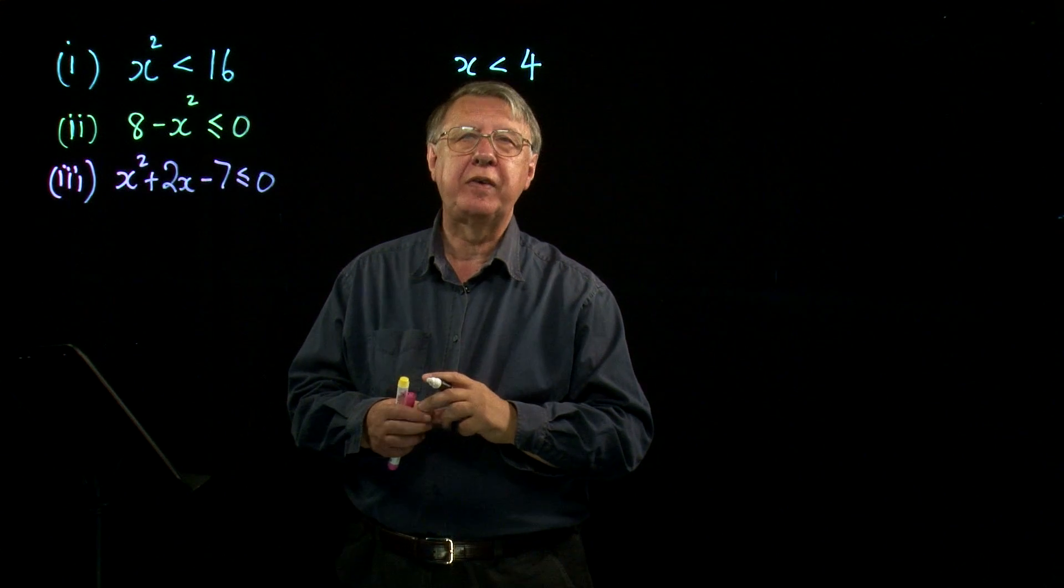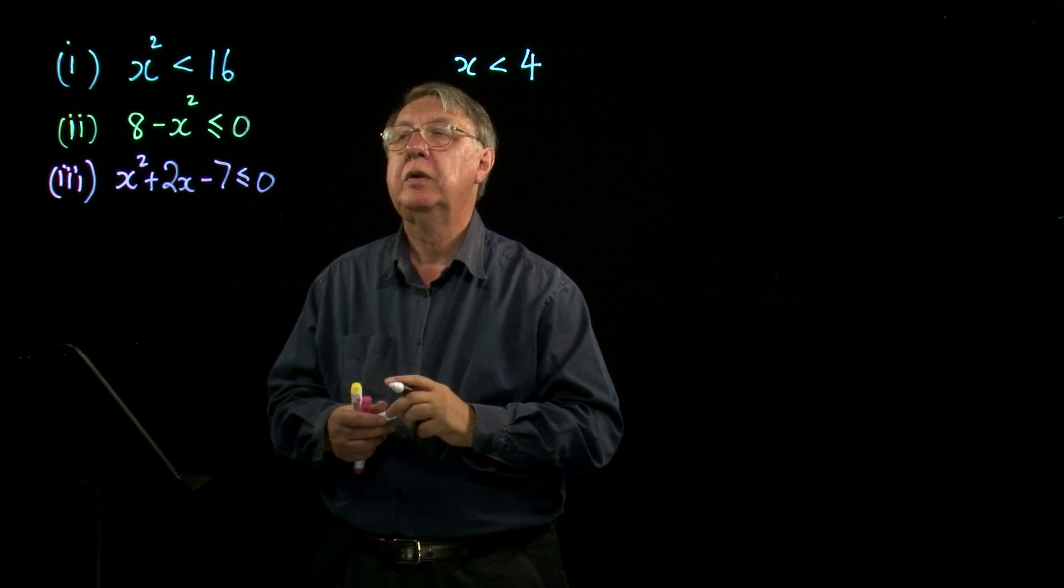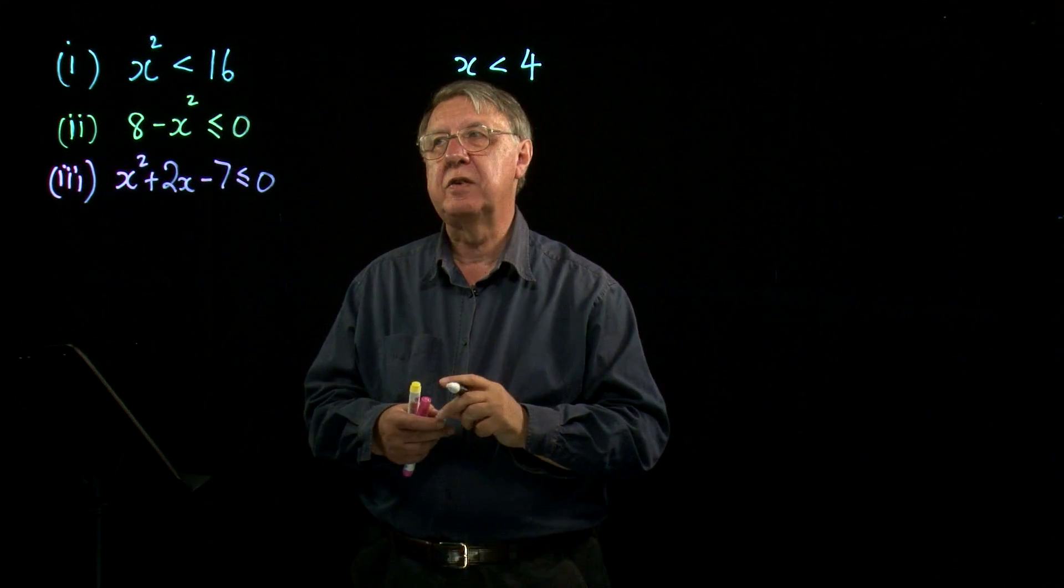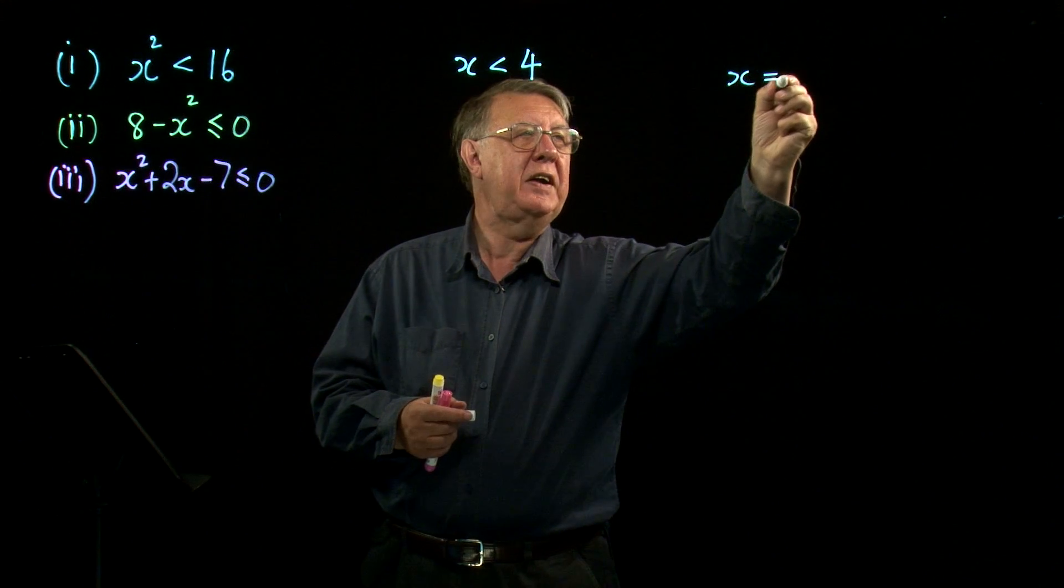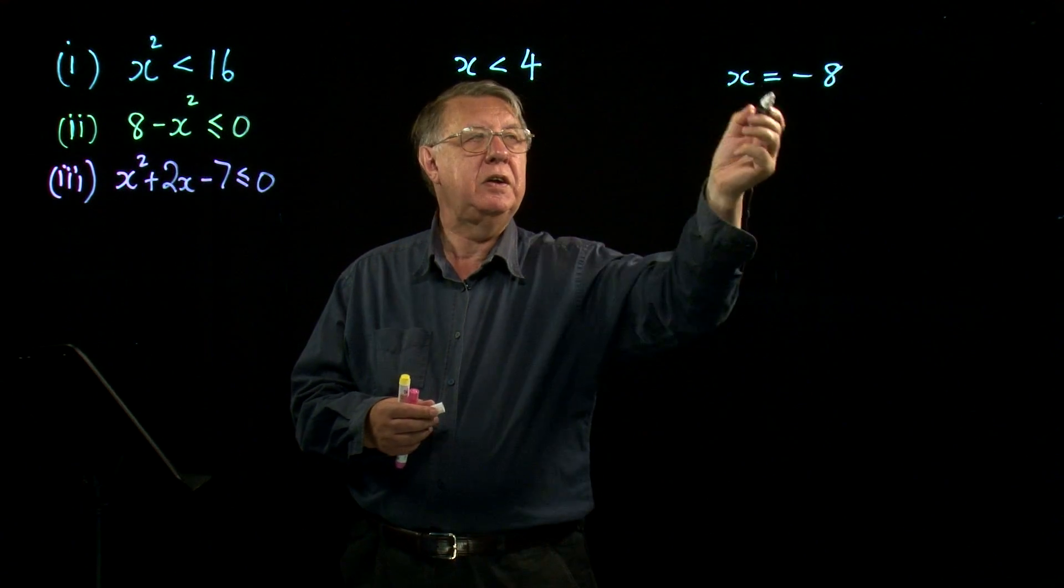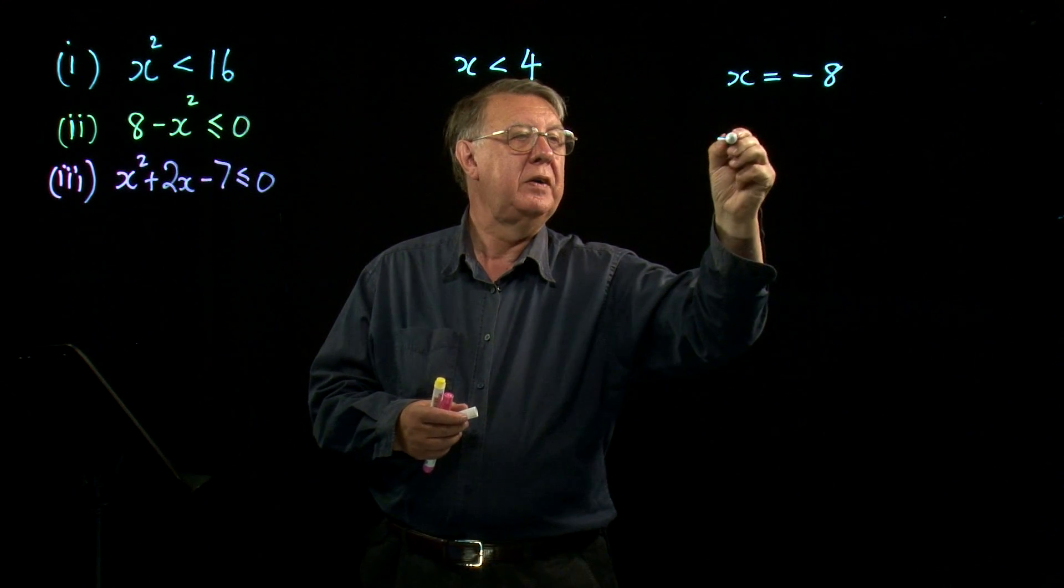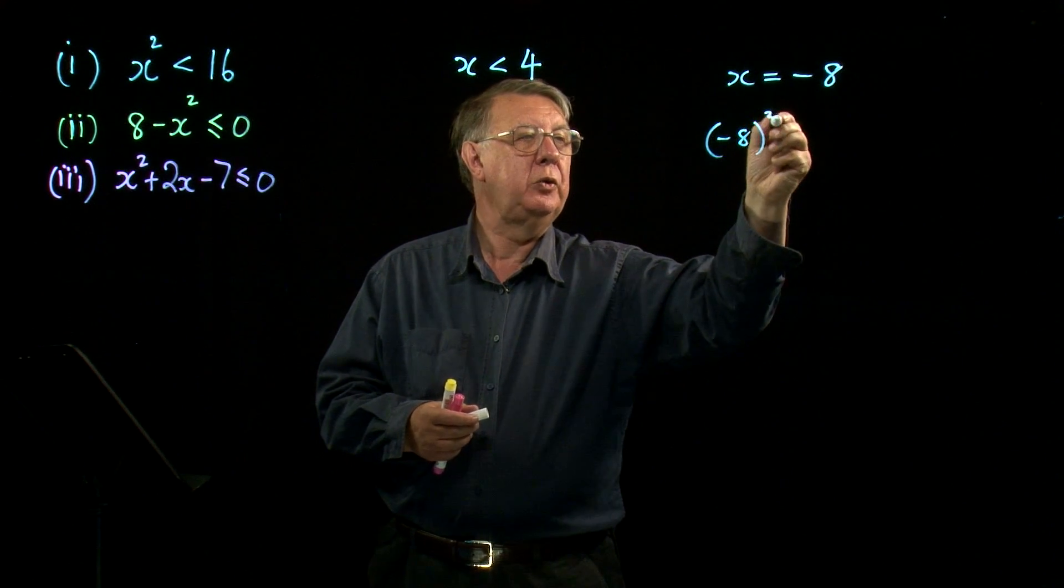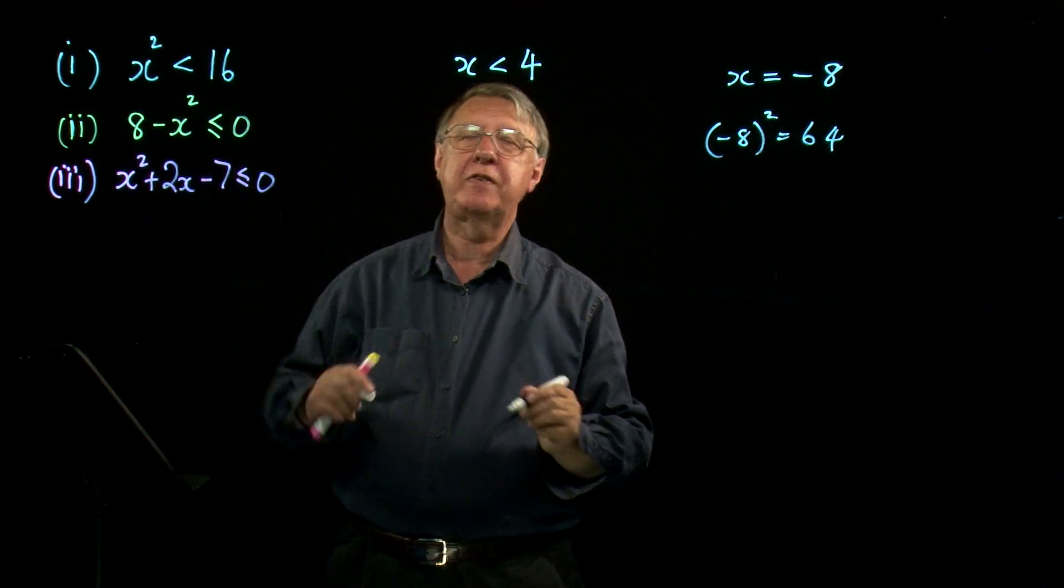Well it's certainly true that if x is less than 4 and x is positive, that x squared is less than 16. But if I said to you, if x is negative 8, that's certainly less than 4. But of course if you square negative 8, you get 64, which is definitely not less than 16.